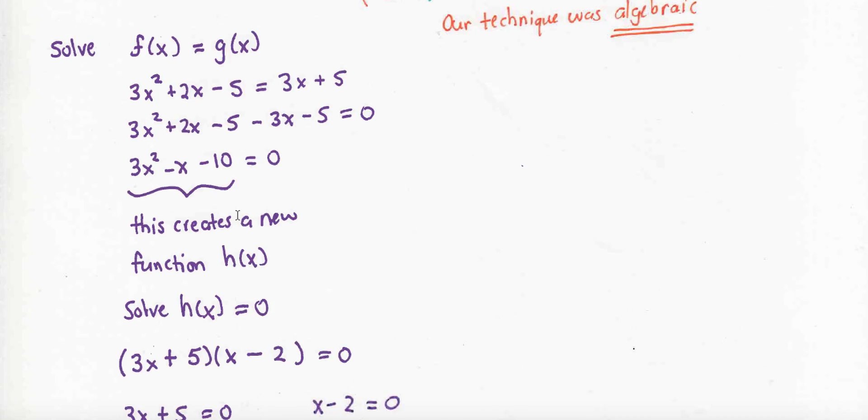What if I have f of x equals g of x and I want to solve this? Well, I set the two functions equal to each other, f on the left and g on the right. And then what I do is I subtract g to the other side. So I have f minus g. And that creates a whole new function that we'll call h.